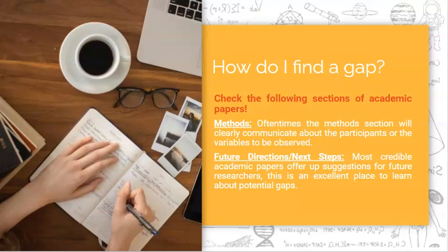Now, how do I find a gap as a student researcher? I highly suggest checking the following sections of academic papers. Look at the methods section. Many times in the methods section, the researchers will communicate about the participants or the variables to be observed. They'll give some very clear details. Maybe they'll identify the age range, the ethnicity, the location in which people live, the socioeconomic class of their participants. So just look at the methods section, and oftentimes you might be able to find an identifiable gap because your research is going to address something they did not. Maybe they looked at one age group and you're interested in looking at a different age group.